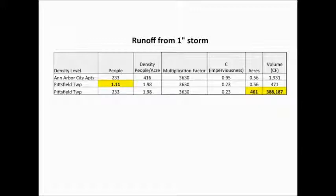So that's a lot of runoff for a half an acre. But if you look at Pittsfield Township, if you take that same 0.56 acres, it only runs off about a quarter of that volume because it's less impervious, right? But it serves one person instead of 233. If you were to take the 233 people that are going to live in Ann Arbor City apartments and you put them out in that density and the same imperviousness that you have in Pittsfield Township, they would take up 461 acres, and the runoff for the one-inch storm would be 388,000 cubic feet. So it's about a 200 times difference.